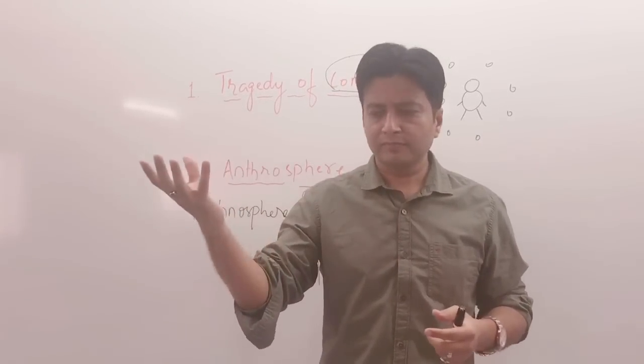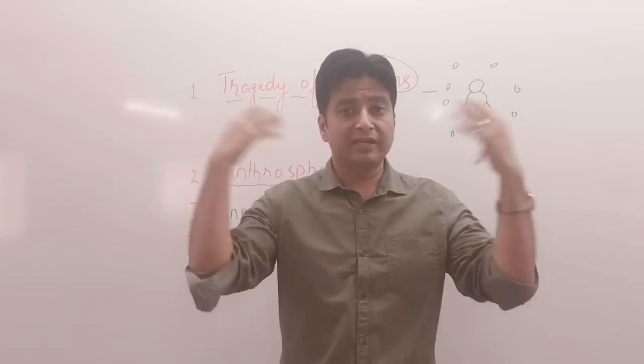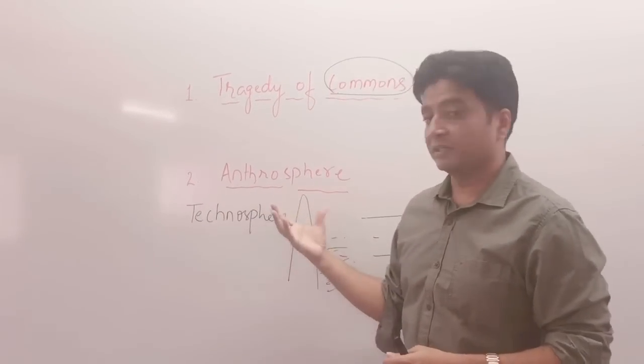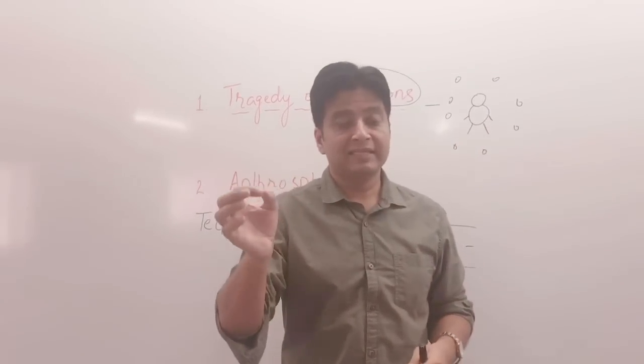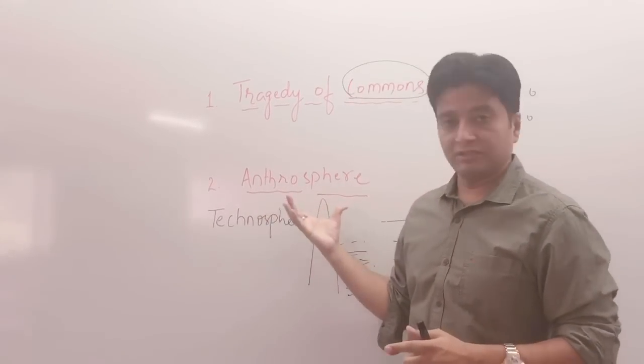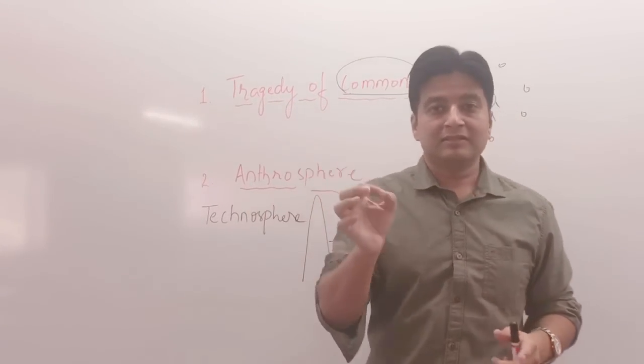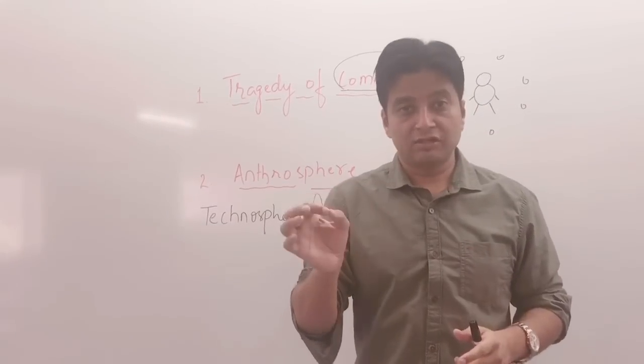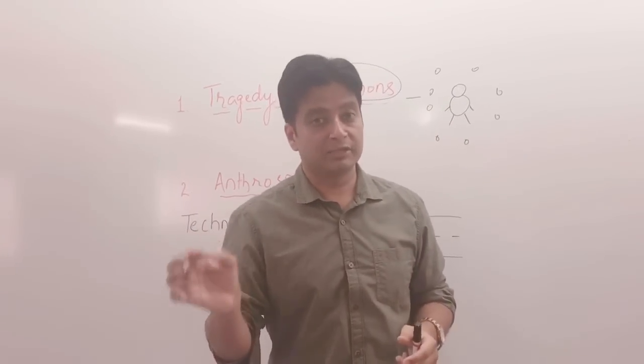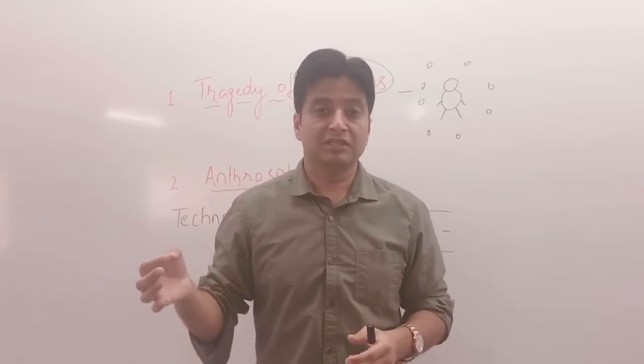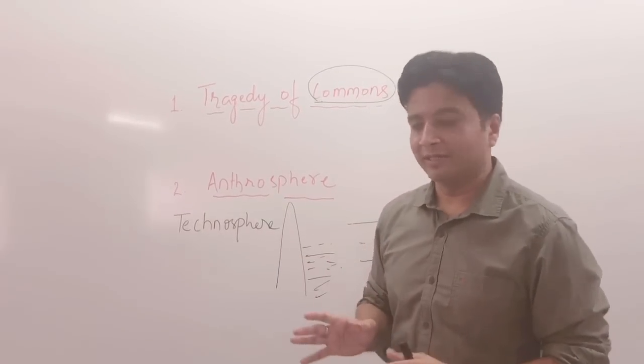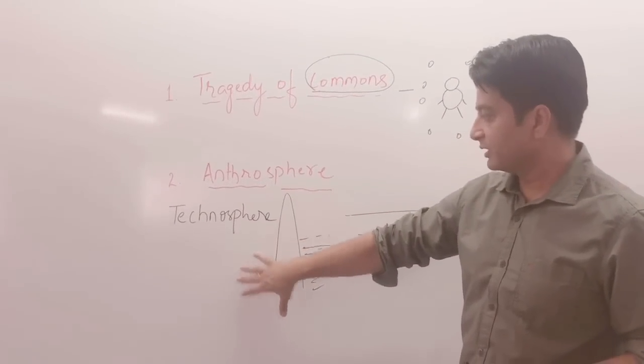Say for example, we are making one SEZ, a special economic zone. So we are making a boundary around that project. That will be anthrosphere. The human-made activities making one area defined will be called anthrosphere. So this anthrosphere is not natural. It is artificial. Some damage has been made to the natural atmosphere causing deterioration in the water quality, in the air quality, also the land quality.